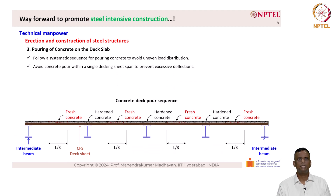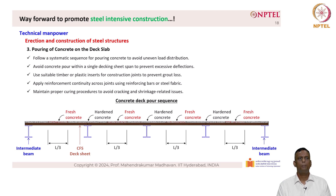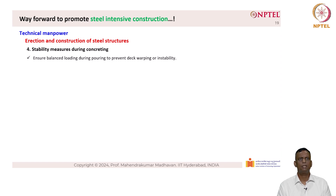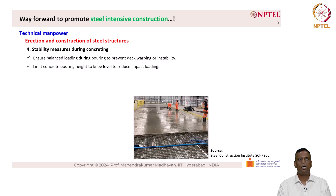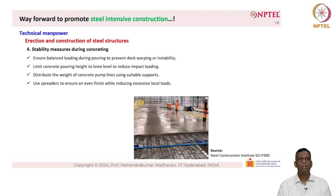Avoid concrete pour within a single decking sheet span to prevent excessive deflections. Use suitable timber or plastic inserts for construction joints to prevent grout loss, and maintain proper curing procedures to avoid cracking and shrinkage-related issues. For stability measures during concreting: ensure balanced loading during pouring to prevent deck warping or instability; limit concrete pouring height to knee level to reduce impact loading; distribute the weight of concrete pump lines using suitable supports; use spreaders for an even finish while reducing excessive local loads; and monitor deck deflections and adjust pouring sequences if necessary.